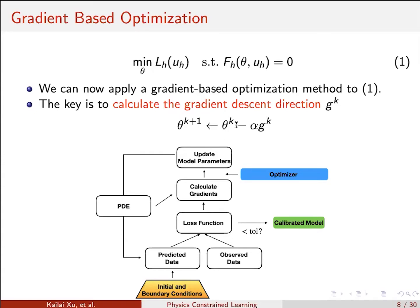You update your parameter in this direction. This is the diagram for your inverse problem optimization: you have a PDE and a model parameter, you estimate predicted data based on initial and boundary conditions, and then you also have observed data. You measure the discrepancy between predicted and observed data — your loss function — then compute gradients G_k and use the optimizer to update the parameter. In my work, I usually use the BFGS optimizer because we have a small amount of physics data and can afford this quasi-second-order optimizer.